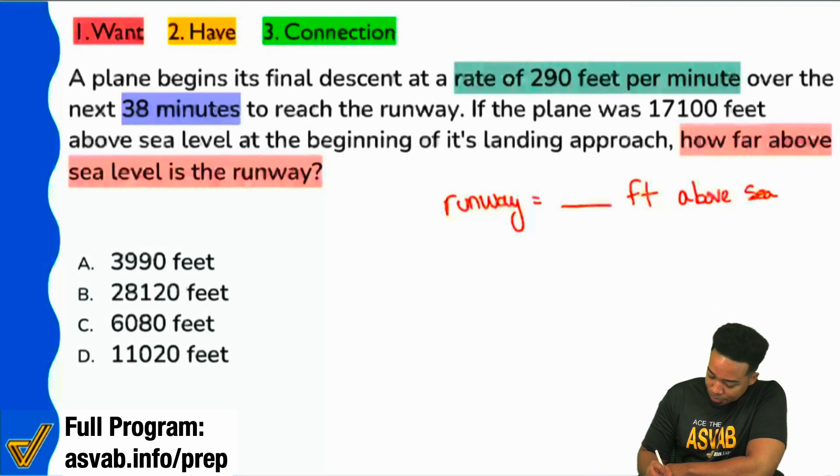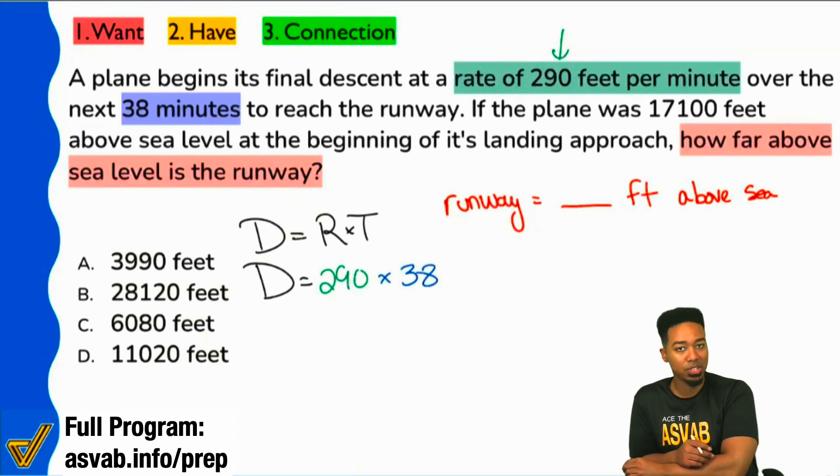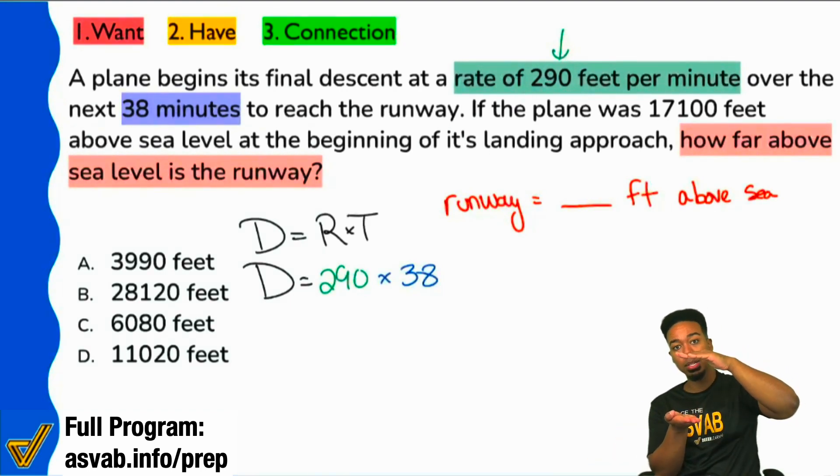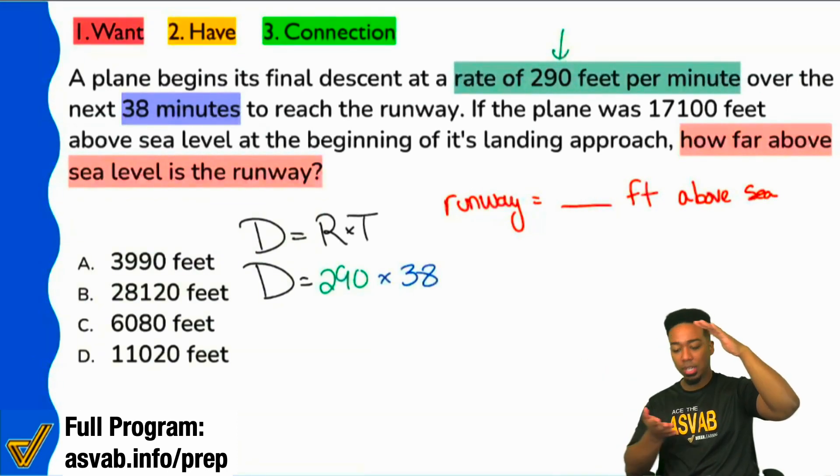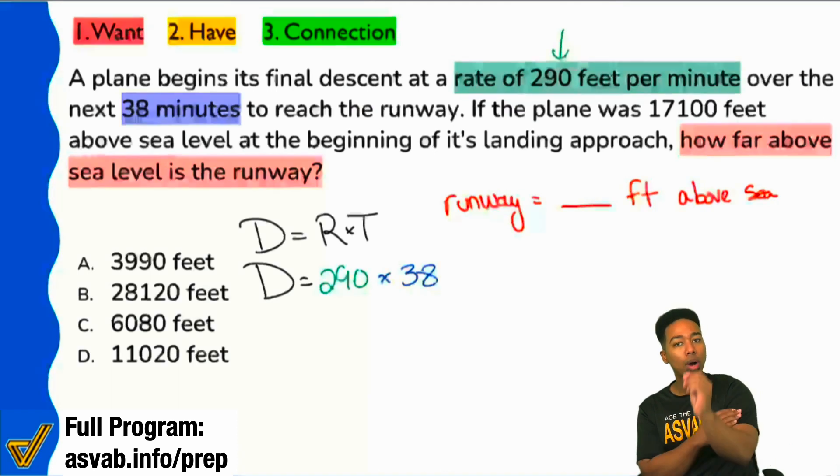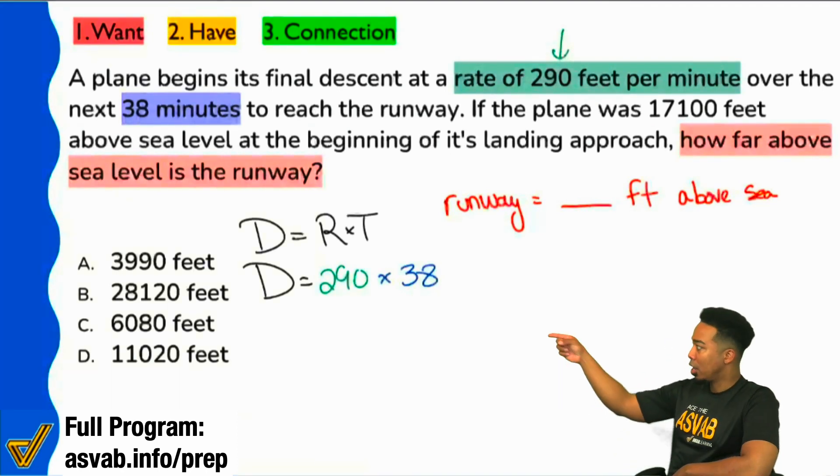So if that makes sense to you visually and intuitively, now we can proceed to getting the answer. We have the rate and time. Let's write this over here. Distance equals my rate and my time. And we can repeat this right over here and fill it in where we have the 290. And then the time is going to be 38 minutes. Now before we continue, let's understand what that's going to bring us, what that's going to mean. If we calculate the rate times the time, what that's going to give us, it's going to give us the in-between. We know where the plane started. We're trying to find out where it ended up, but we have enough information to figure out the in-between.